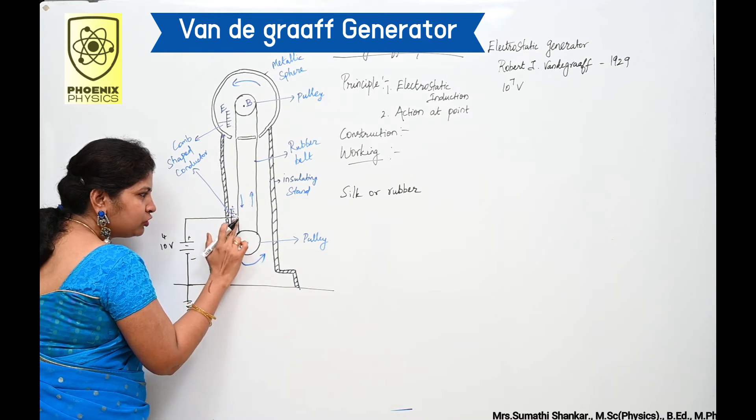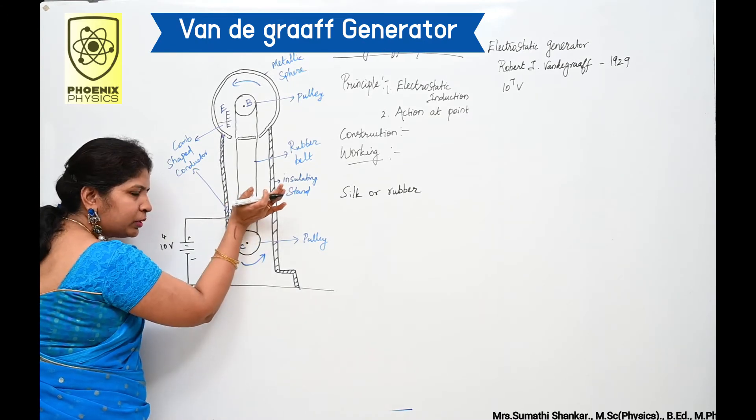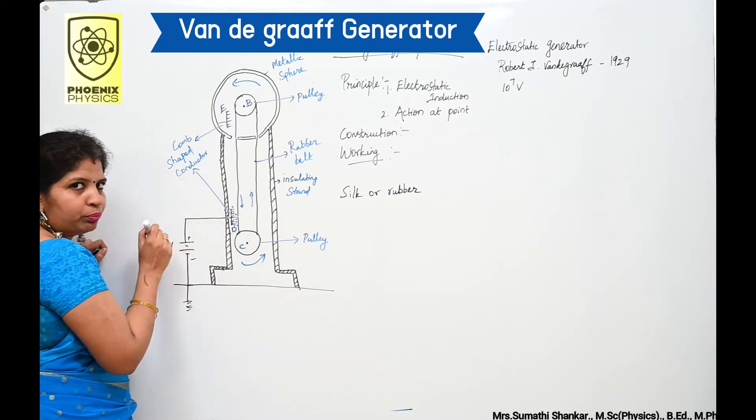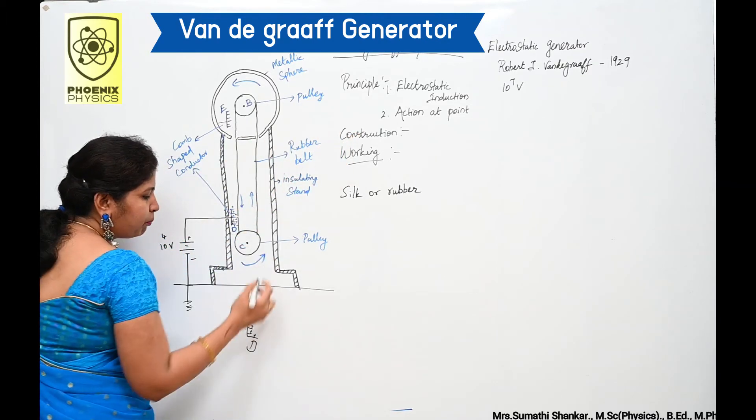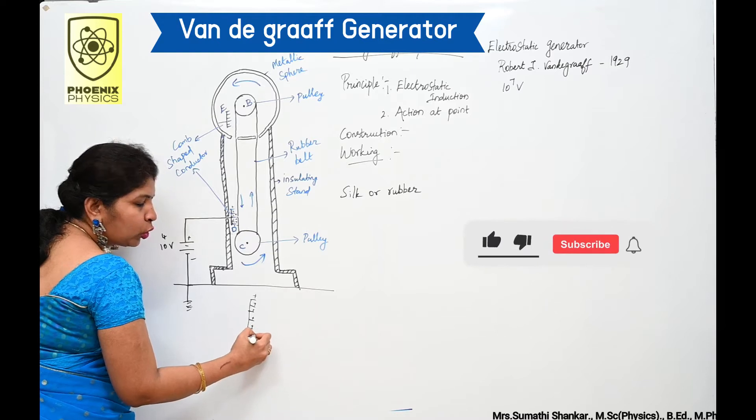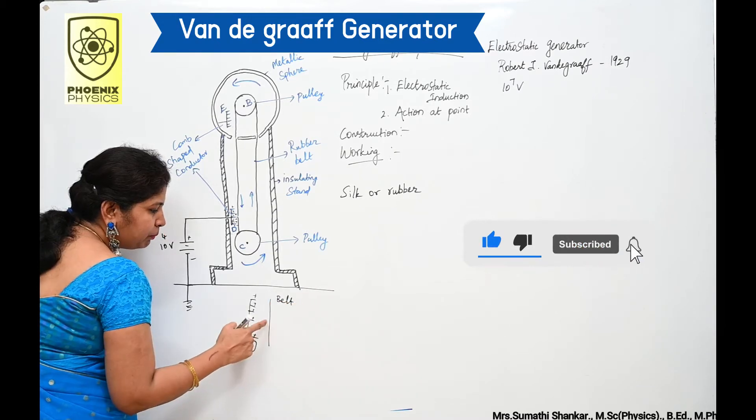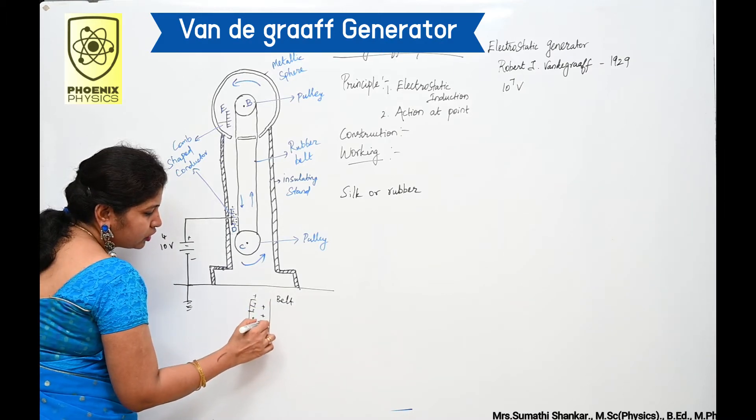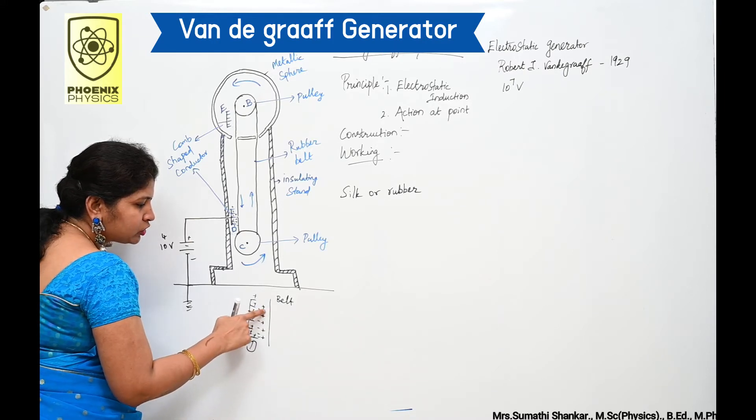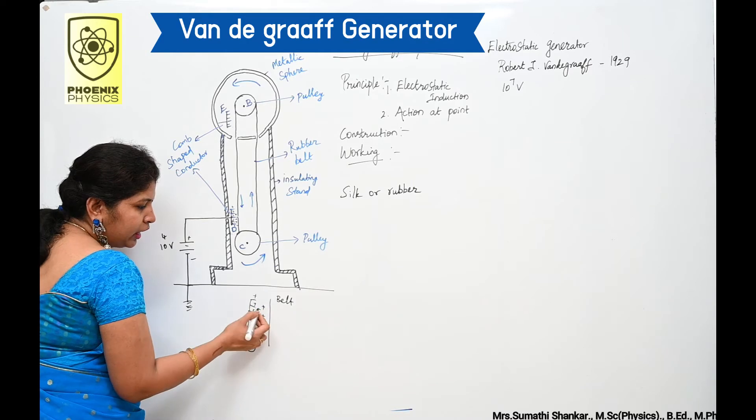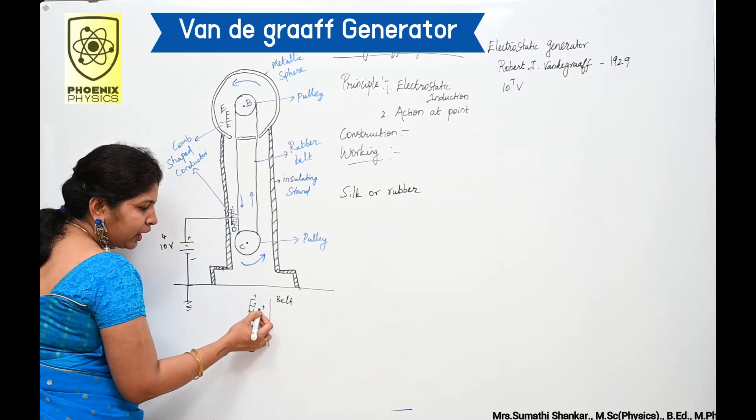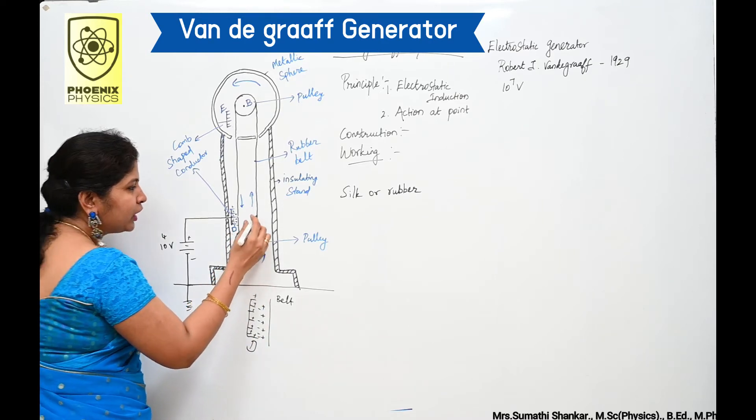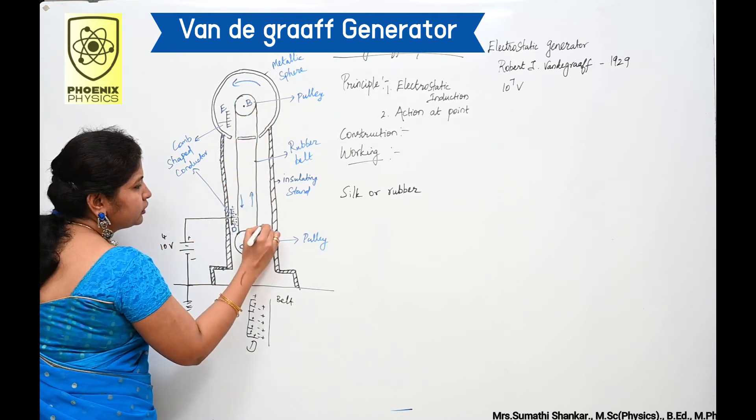Positive charges are pushed towards the belt and negative charges are attracted towards the comb. So positive charges stick to the belt and move up like this.